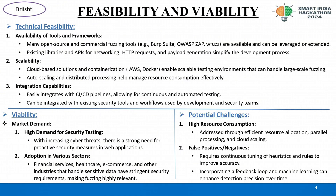Technical feasibility — availability of tools and frameworks: many open source and commercial fuzzing tools like BurpSuite, OWASP ZAP are available and can be leveraged or extended. Existing libraries and APIs for networking, HTTP requests, and payload generation simplify the development process.